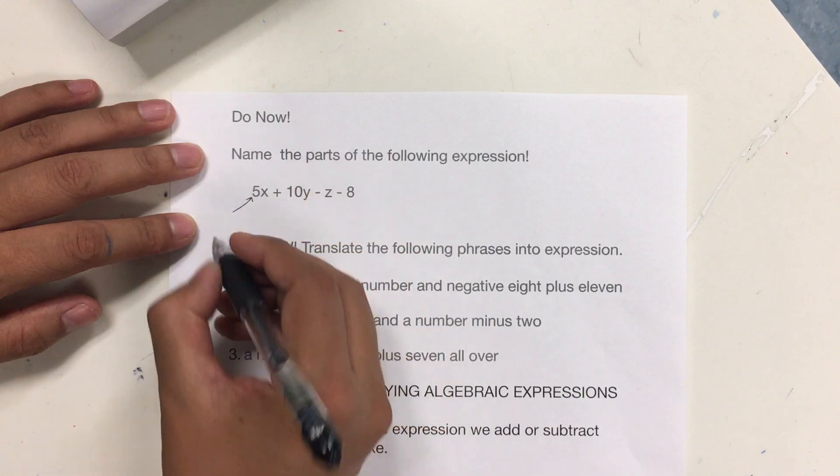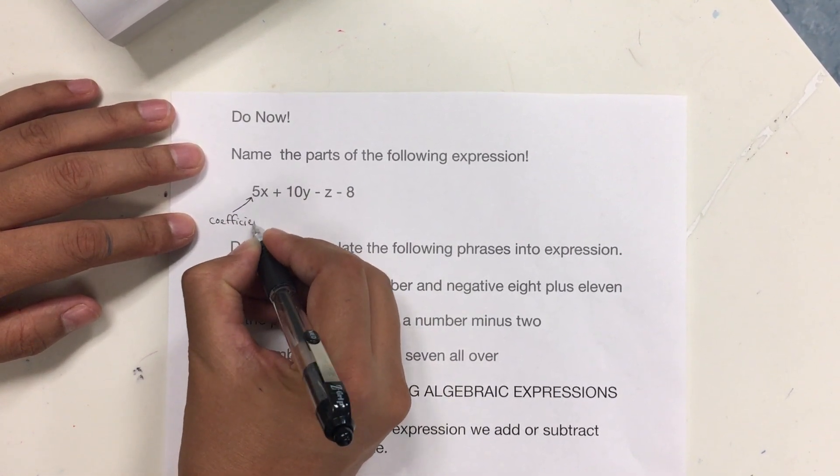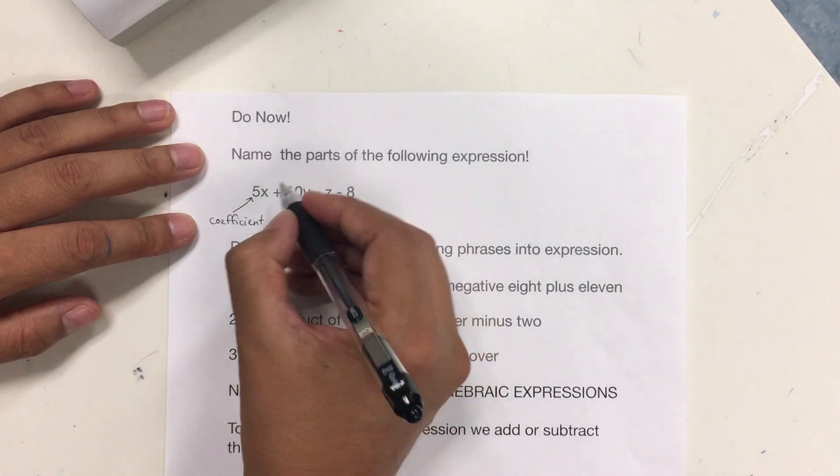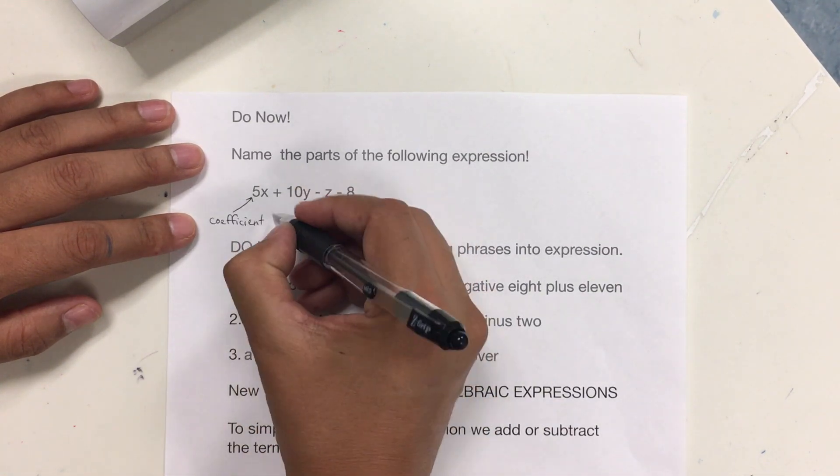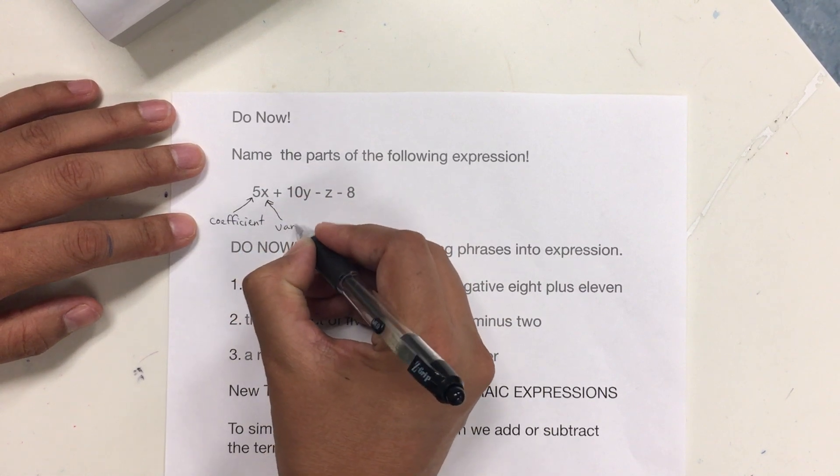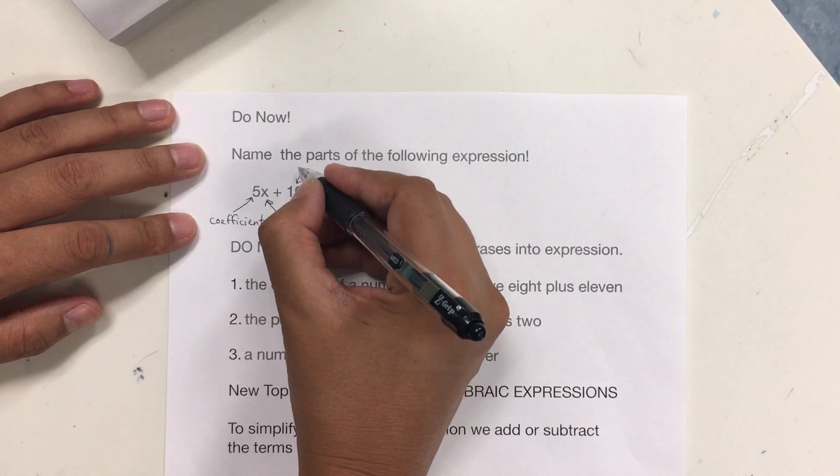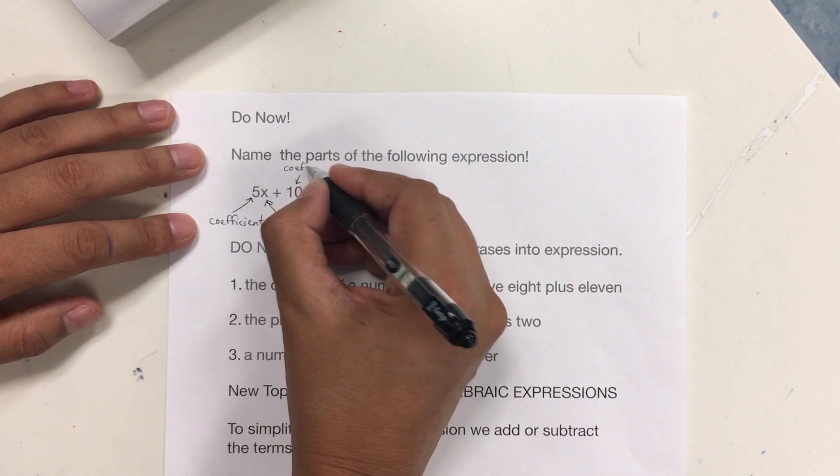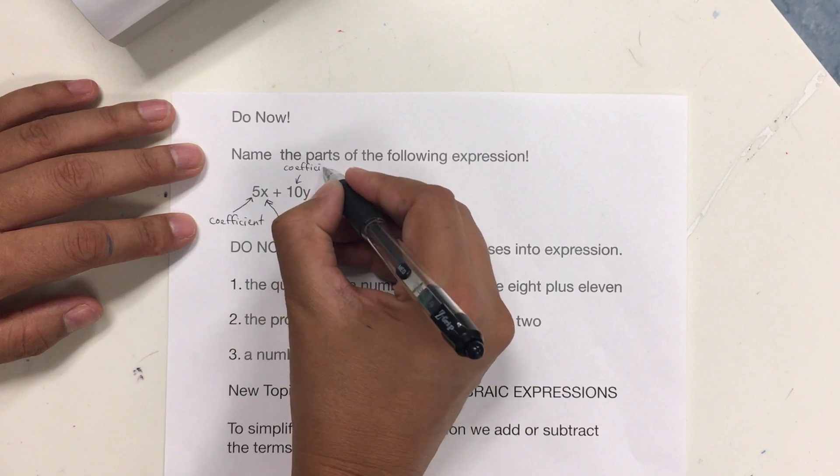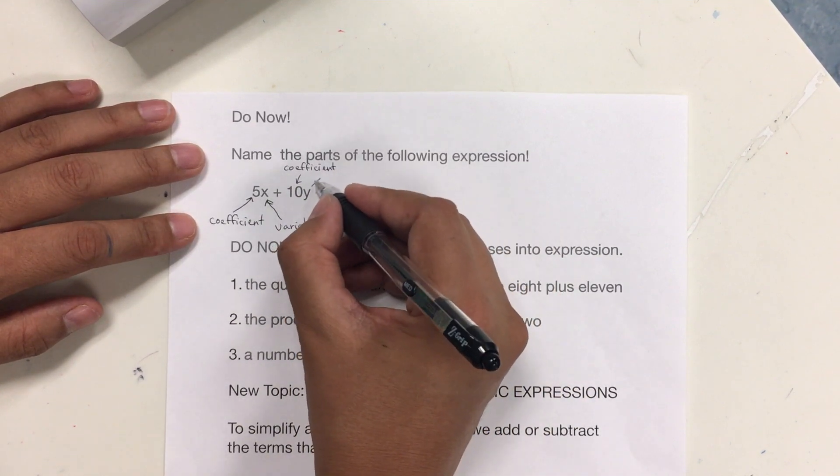we have a coefficient, which is 5. The x, it's a variable. 10 is also a coefficient. The y is a variable.